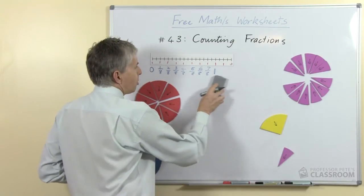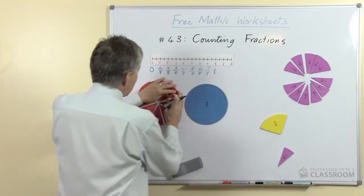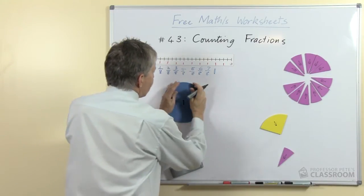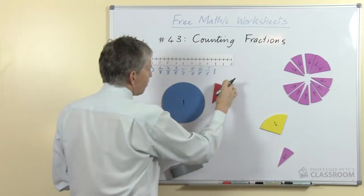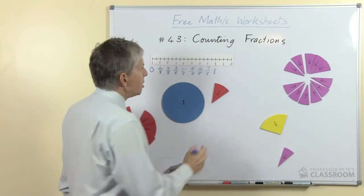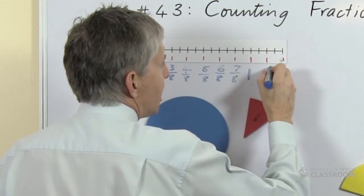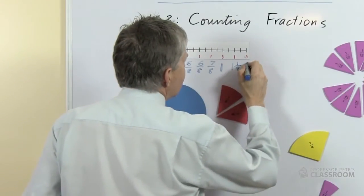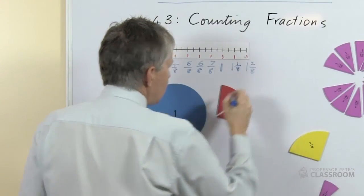Let's say we're not doing improper fractions at this point, let's just say we're now up to a whole, so this is where we're up to. We've counted up in eighths, we're now up to a whole. How much will I have if I add another eighth? So what's the next number on the number line? Of course it's going to be one and one eighth, and the next one will be one and two eighths.